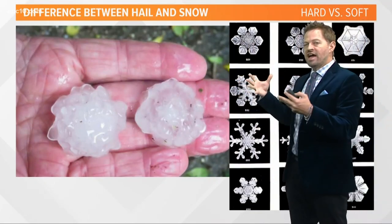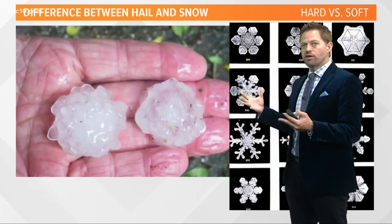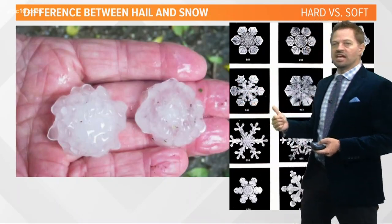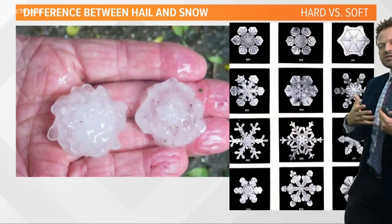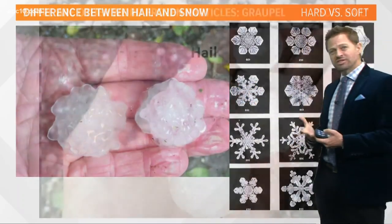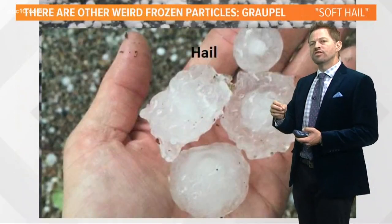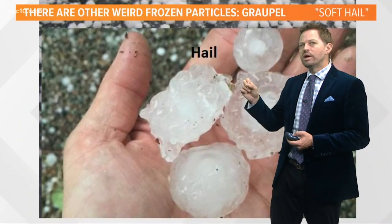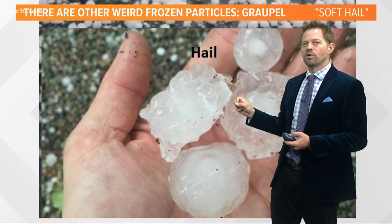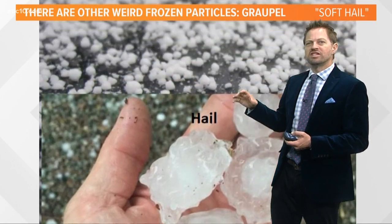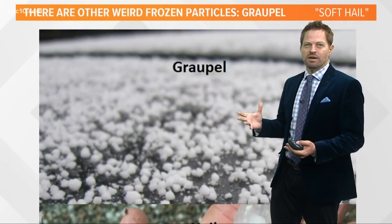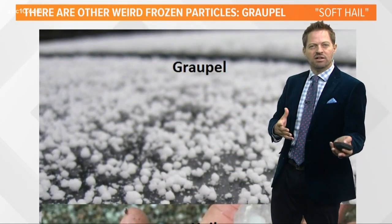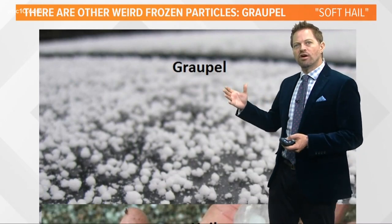A snowflake is different. It starts off as a frozen particle and then grows in the ways that you see here. And it's also soft, and it's mostly air, so they are very different. But we do get into these weird subcategories where you start to see other types of frozen precipitation, which is somewhere in between hail and also snow.